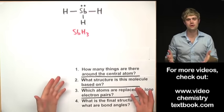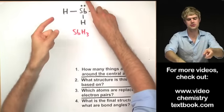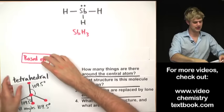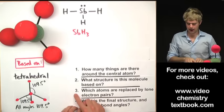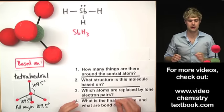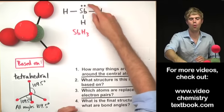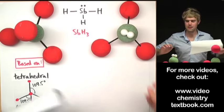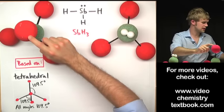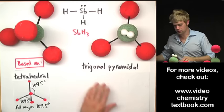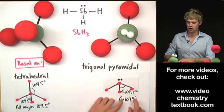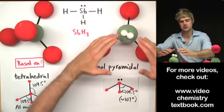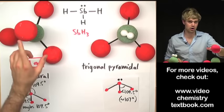SbH3: how many things are around the central atom? Three bonds and one lone electron pair — four things total. So it's based on a tetrahedral shape. One of the four positions is a lone electron pair, so this lone pair replaces one atom. The result is the trigonal pyramidal shape, with a bond angle of about 107 degrees — a little smaller than the 109.5 of tetrahedral because the lone electron pair pushes the atoms harder than an atom would.